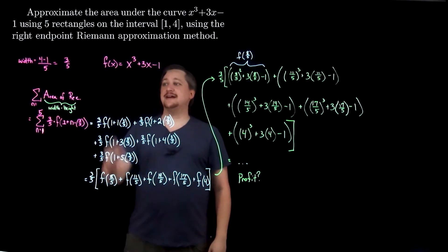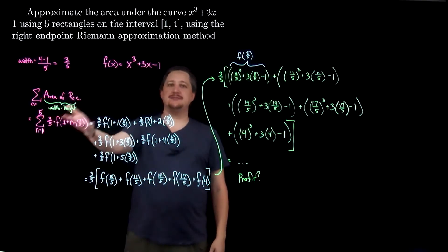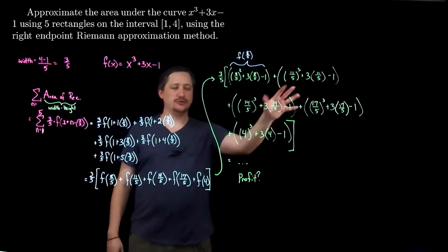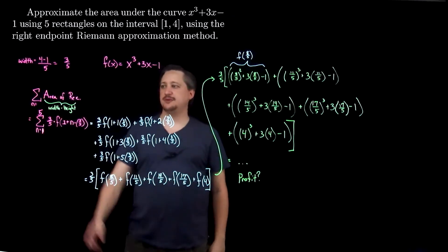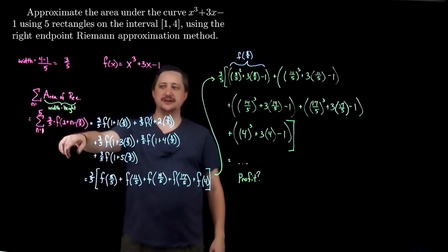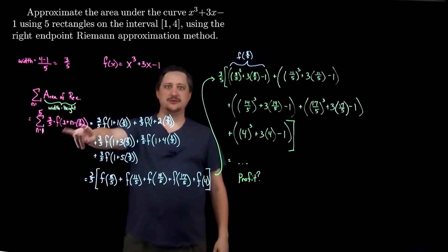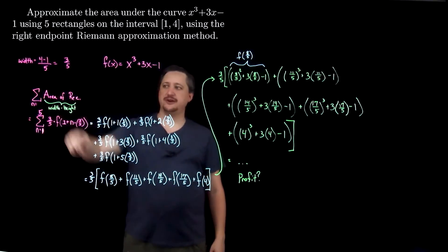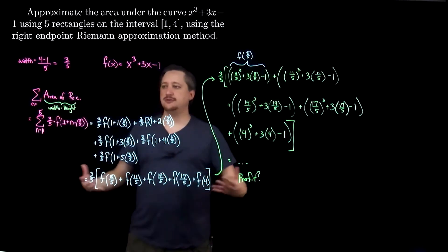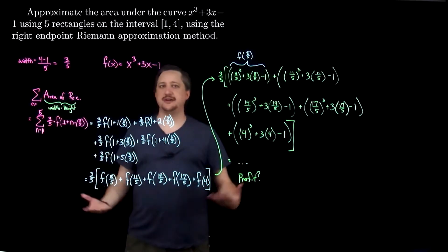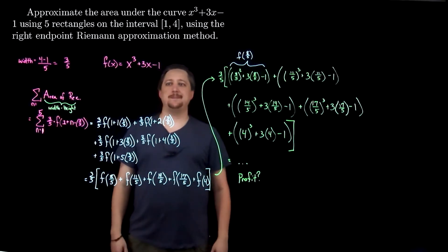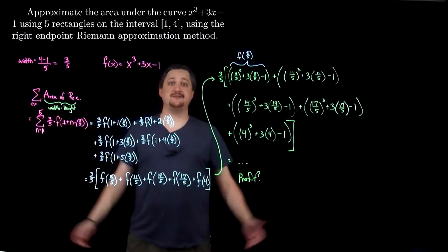I didn't try to memorize the formula. I drew a little toy example to tell me where n started and whether I want one width or not. But this is still just area of a rectangle — width times height — and put it together.